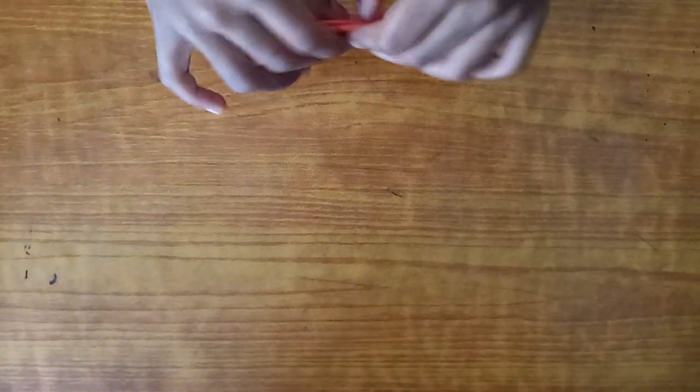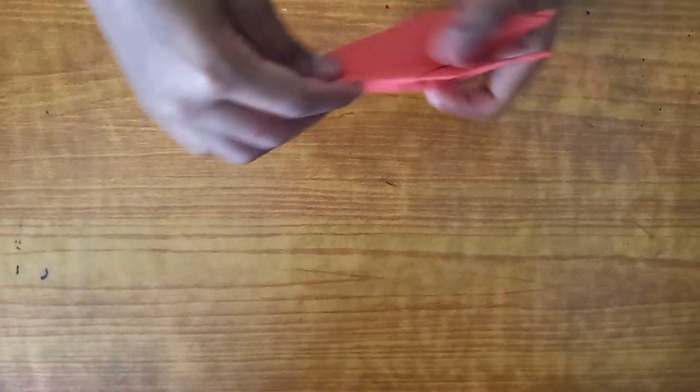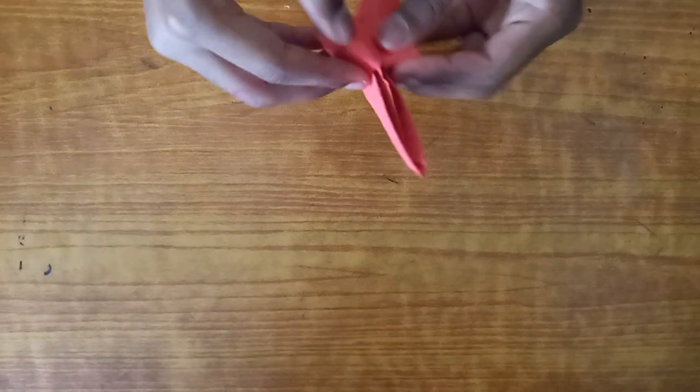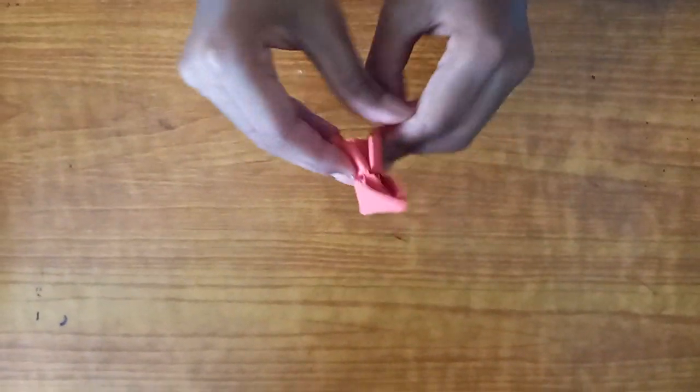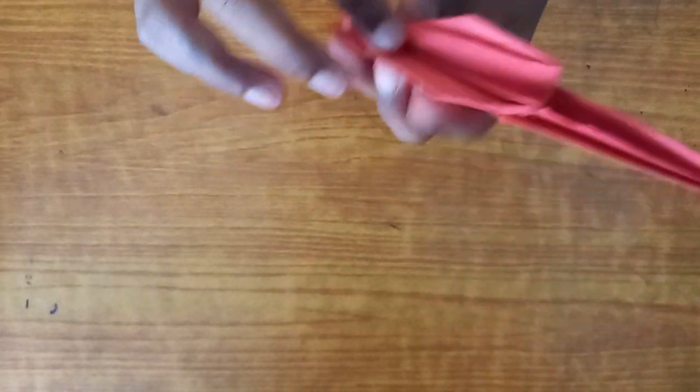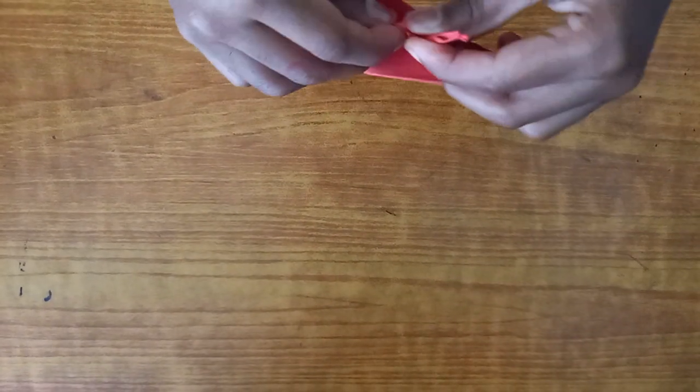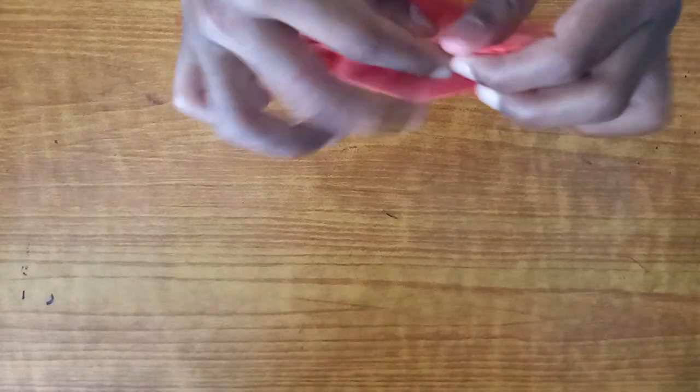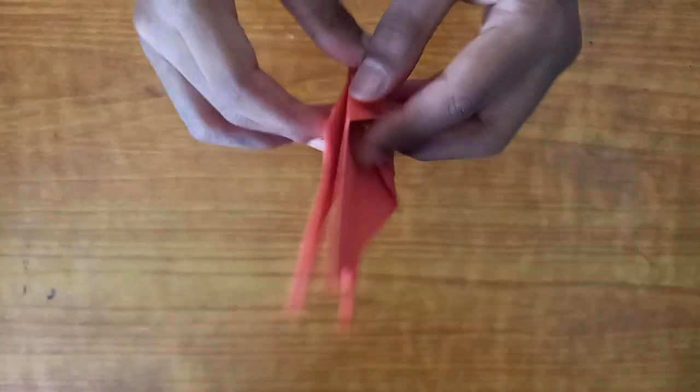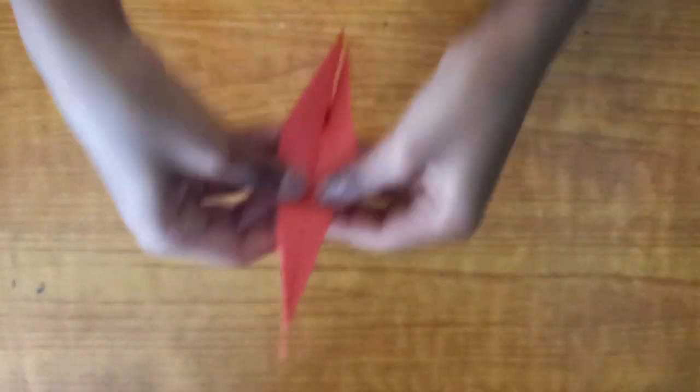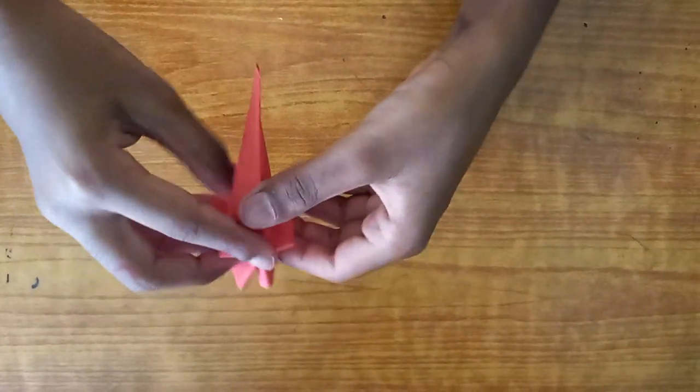Crease it tight. Now open this part up and fold it down. Crease it, fold it, now just squash it. Just like so. And now repeat the same process on this side. Open it up, see the crease, just fold it like that.